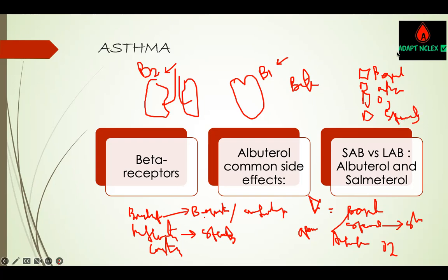For a select-all-that-apply question: treatment for a patient in acute asthma needs a beta agonist — which is albuterol — anticholinergic, usually ipratropium, oxygen, and steroids. This is what you use for acute asthma treatment.